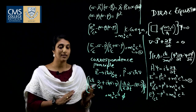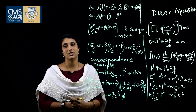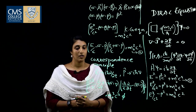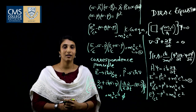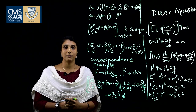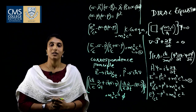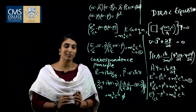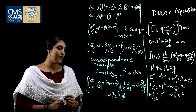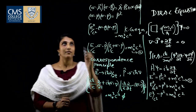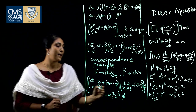Before going to that, let us see how many components the wave function φ has. We have the Pauli spin matrices σ. The Pauli spin matrices are 2×2 matrices, so σ is a 2×2 matrix. Now we expand this equation.